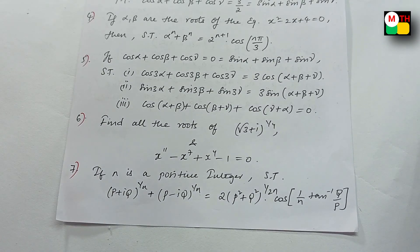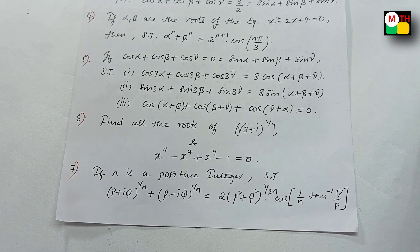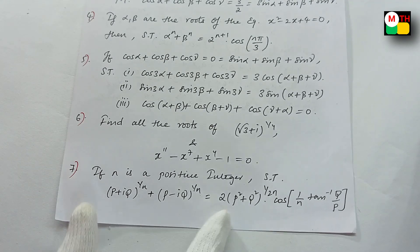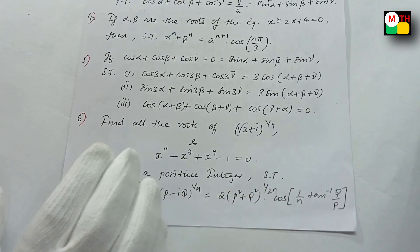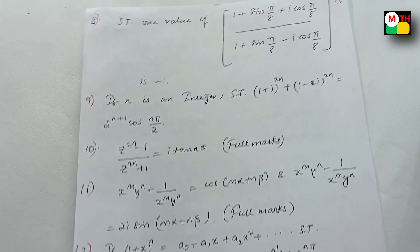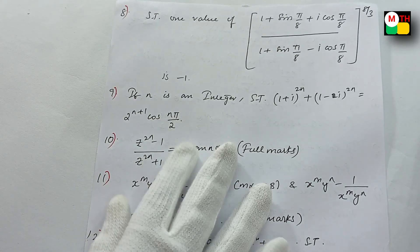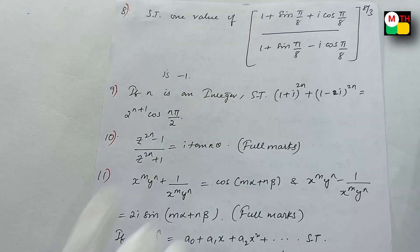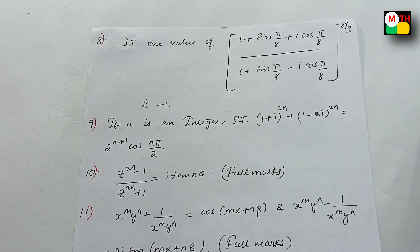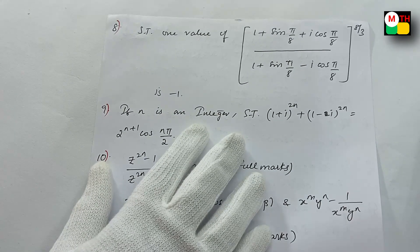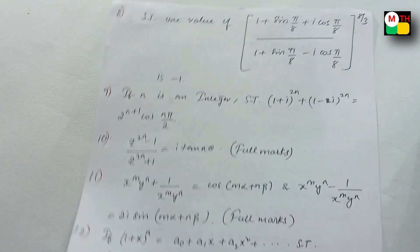So you could use roots. Relu to the root of N equals this — to prove: 2 into p squared whole power 1 by 2 and cos of 1 by N into tan inverse q by p. You need to practice the eighth sum.